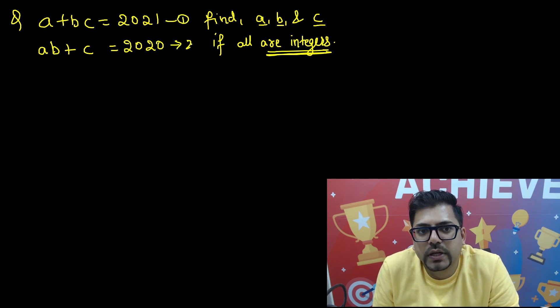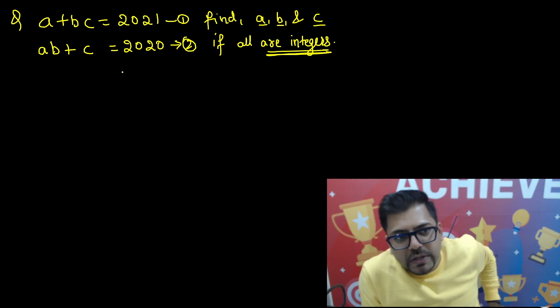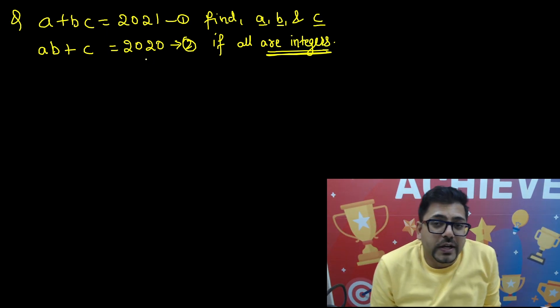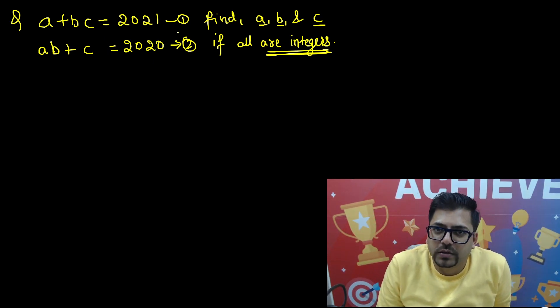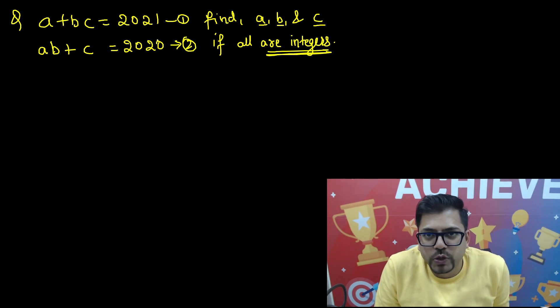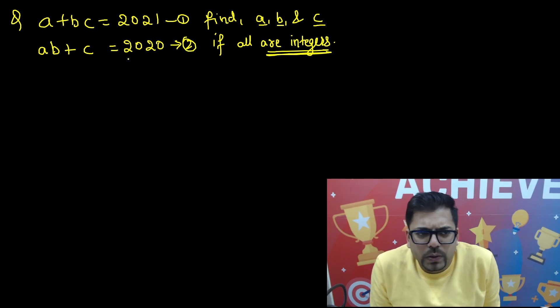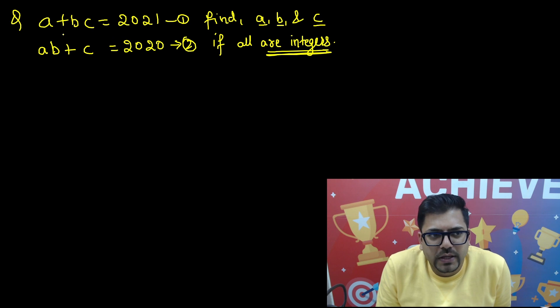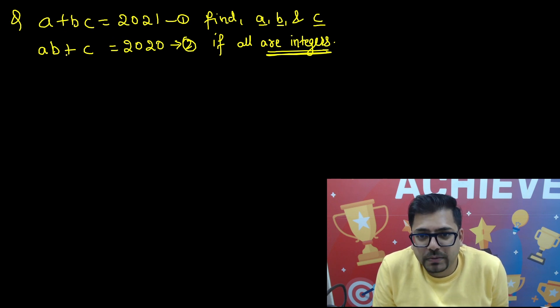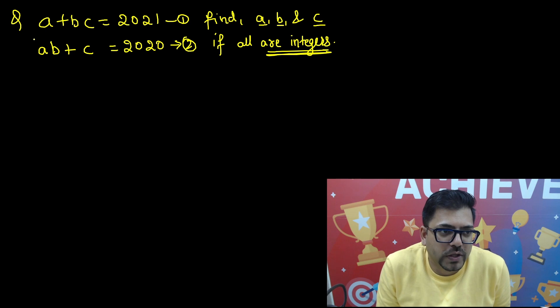So how are we going to do that? See, at first there's no obvious solution. Even you can't do a hit and trial here because these numbers are so big that you can't do a hit and trial. So what should be done?